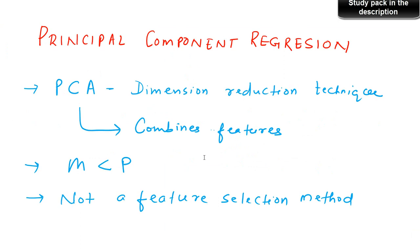The idea is very simple: instead of going ahead with the original set of variables or features available to you, you reduce the set by using principal component analysis. The principal components you get out of PCA are then used in the regression analysis. So instead of using the original variables you are using derived variables, also known as principal components. It is basically a dimension reduction technique.